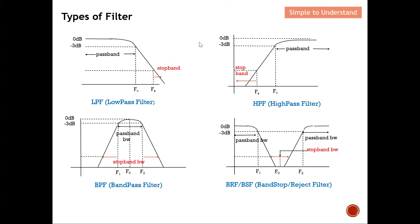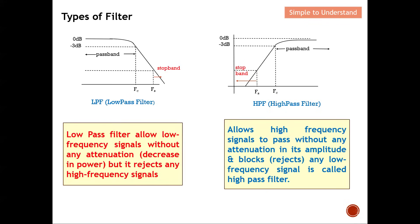There are four types of filters. I mentioned the band pass filter earlier; we also have low pass filter, high pass filter, and band stop or band reject filter. The first is the low pass filter: looking at its S21 response, the low frequencies are allowed to pass while all high frequencies are not. A low pass filter allows low frequency signals to pass without attenuation but rejects any high frequency signals.